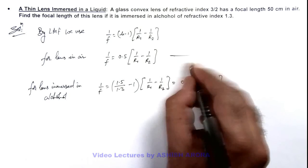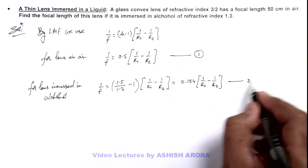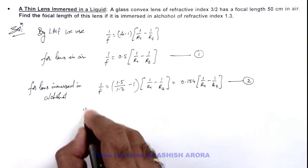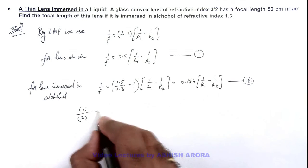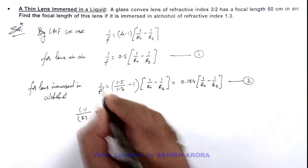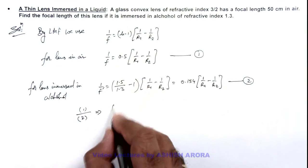If we take this relation as equation 1, and this as equation 2, we can simplify by dividing equation 2 by equation 1, which will give us f'/f = 0.5/0.154.